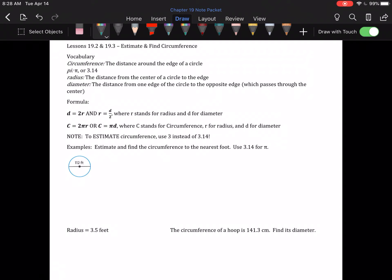The other lesson of chapter 19 deals with finding the circumference of a circle. The circumference is the distance around the edge of a circle. It's a circle's perimeter; circles are just special so they get special words.